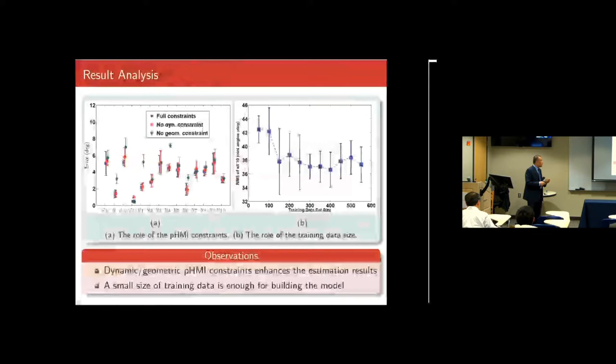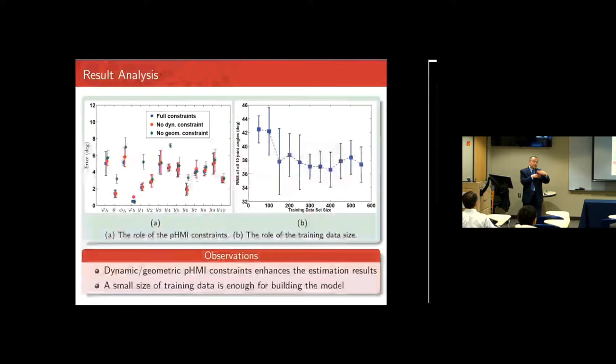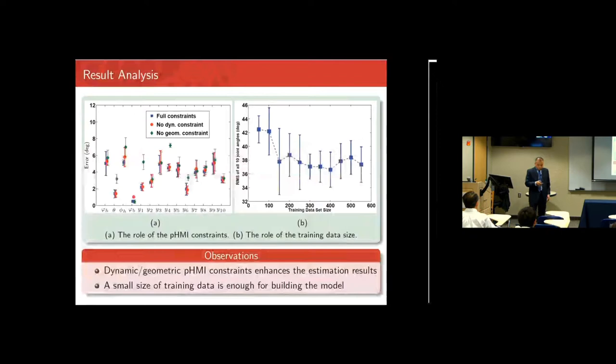The figure shows that including both dynamic constraints and geometric constraints is really useful for reducing drift — only using the model without those constraints is not sufficient.